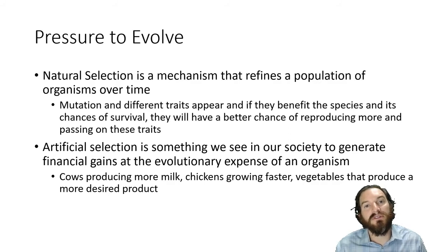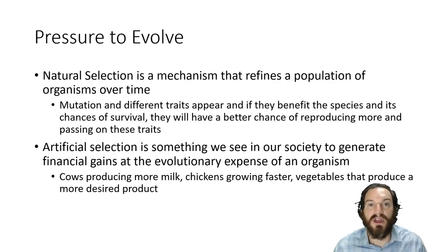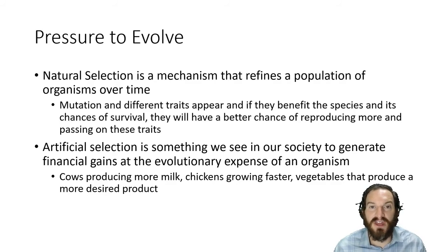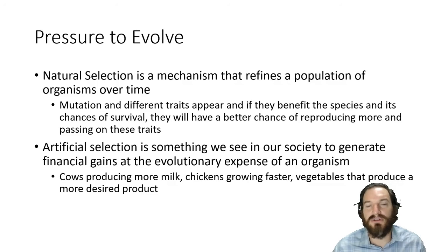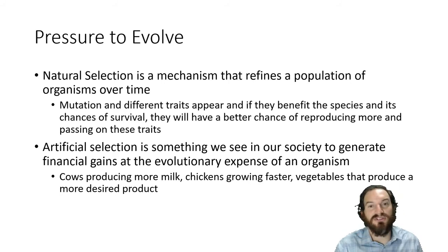Compare that to artificial selection — what humans do. Humans breed certain organisms so they have traits favorable for humans. Think of all the different dog breeds, chicken breeds, and cow breeds — they've all been bred for human profit. If you had a cow that produced more milk, that's great for selling milk, but does that benefit the cow? It'll have extra weight, need extra food, produce extra milk — that's not an evolutionary advantage to the cow. But from a human standpoint you want to breed cows that produce more milk because you'll make more profit.